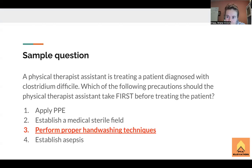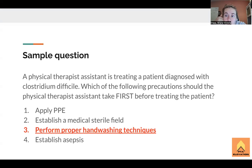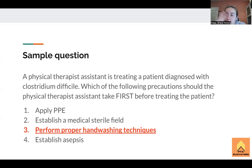Asepsis would be establishing a sterile field. Step two would be making sure the patient is in an isolation room — but you never know where they'll end up, and it's not our job to put them in a specific isolation room. That's already done by somebody else. Basically, that answer choice is irrelevant for what we're doing in this question.